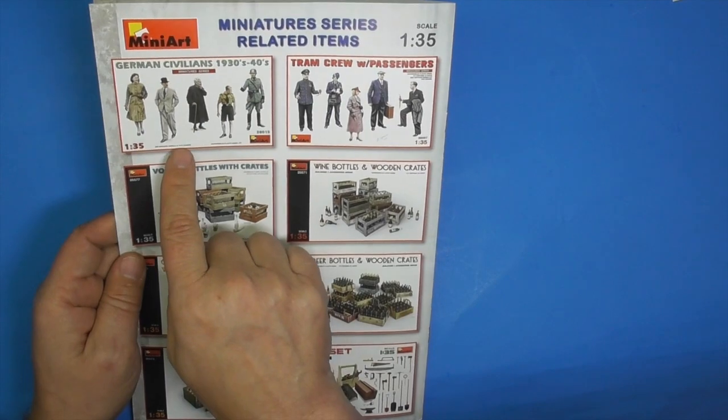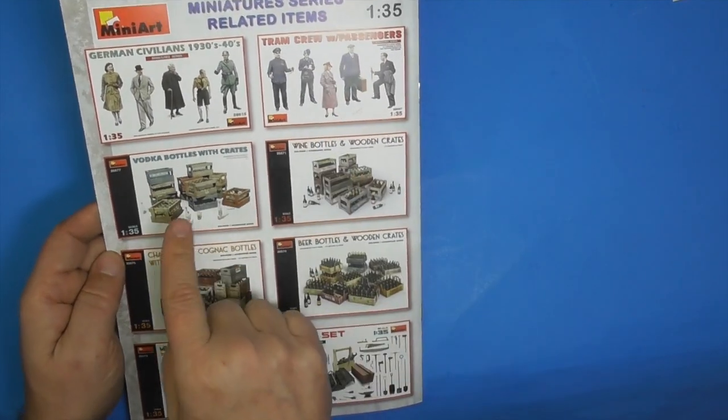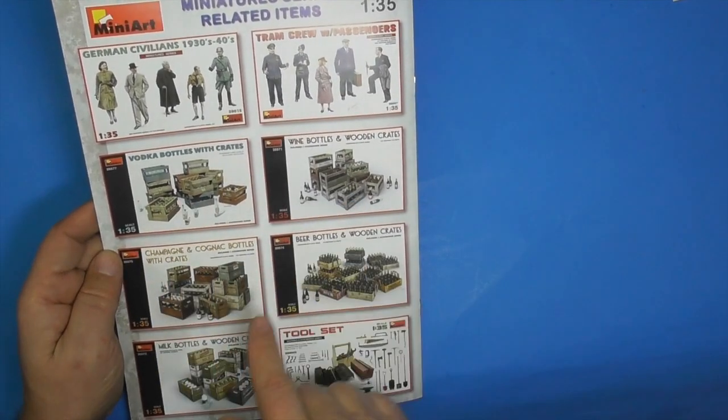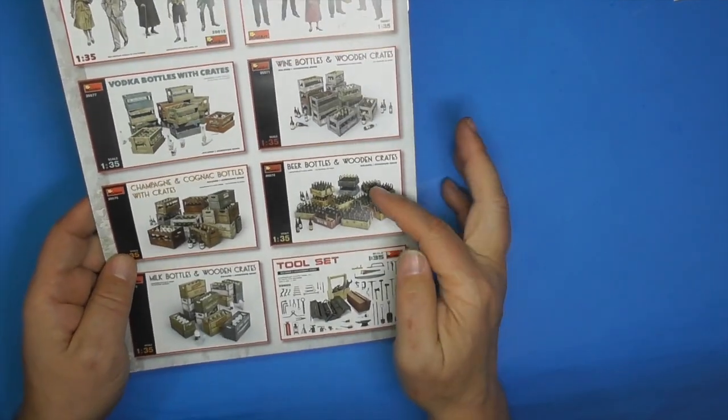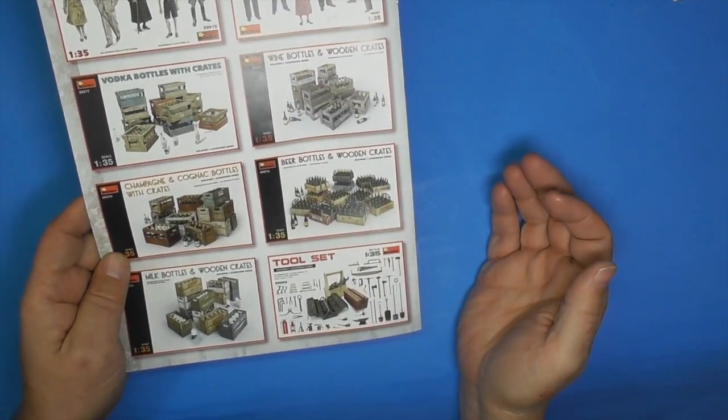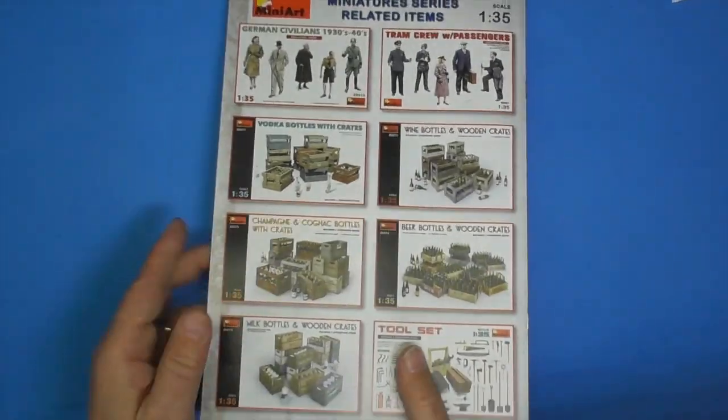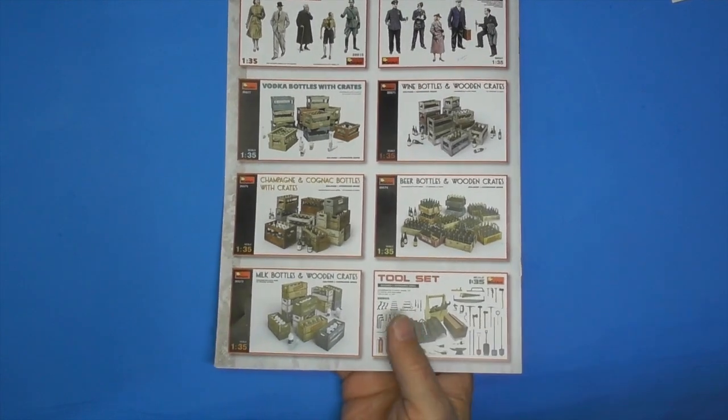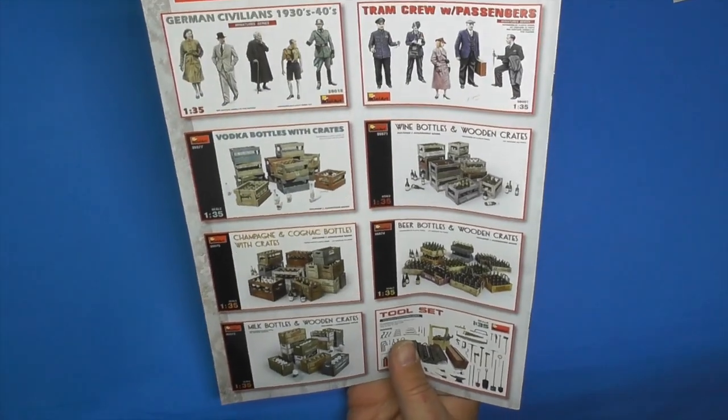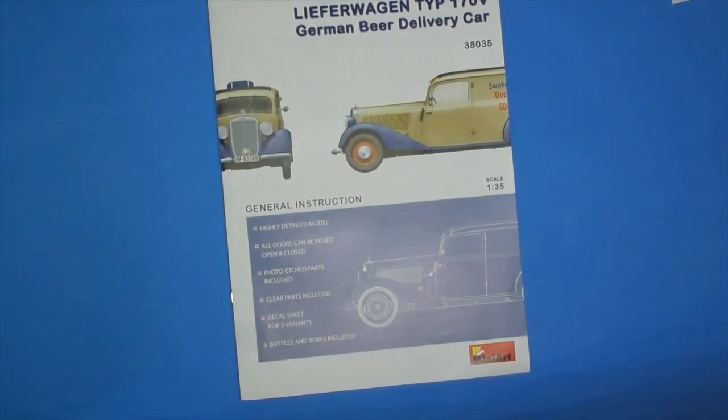And you can buy some civilians, tram passengers. I already have vodka crates. I have wine crates. I don't have champagne. I think I have the beer bottles. I know I have the tools. I think I have the milk cartons. So you can get all these accessories to go along with it. I'm going to have to get me some German civilians, I think. There you have it.